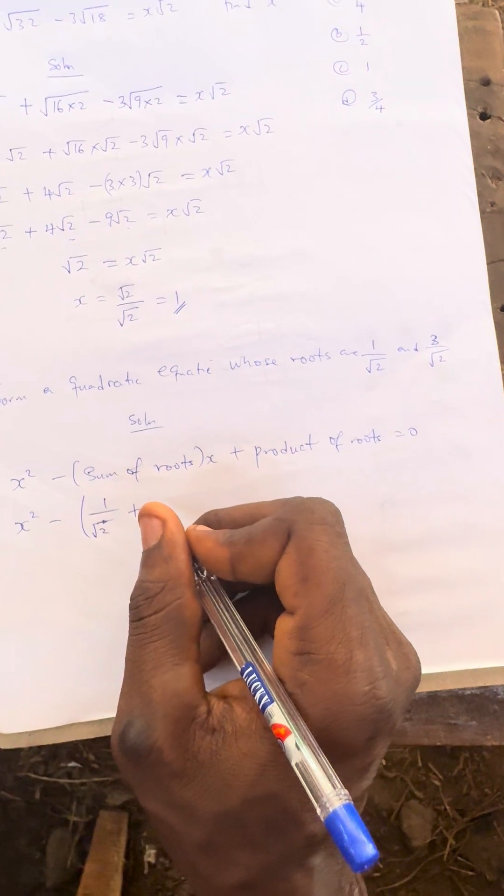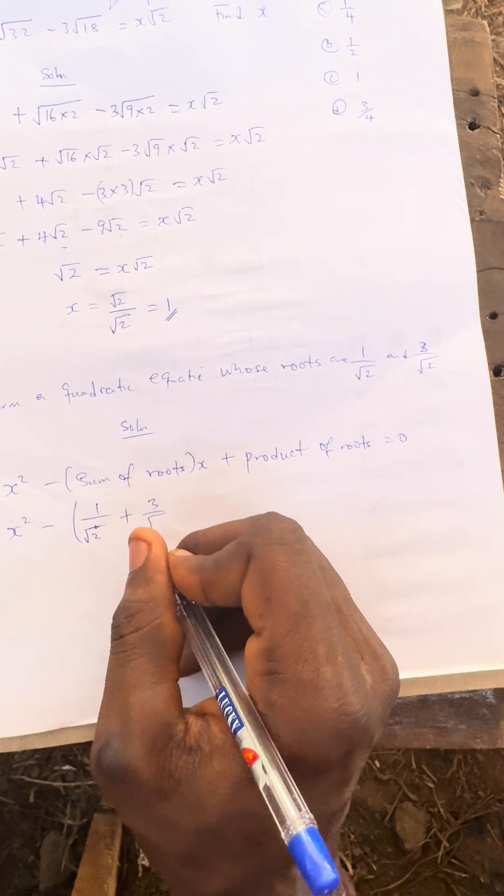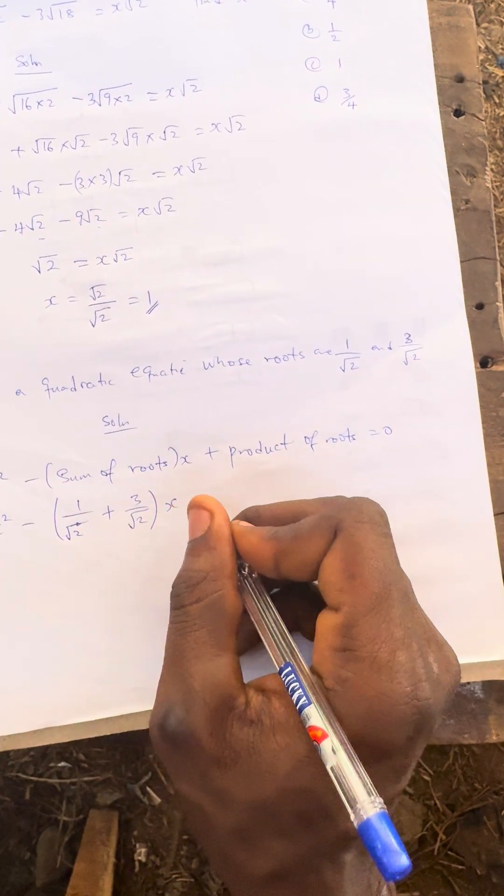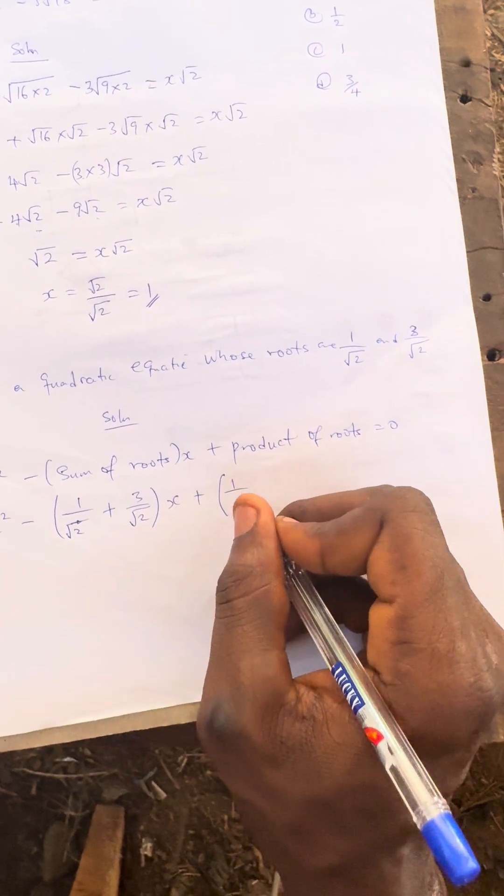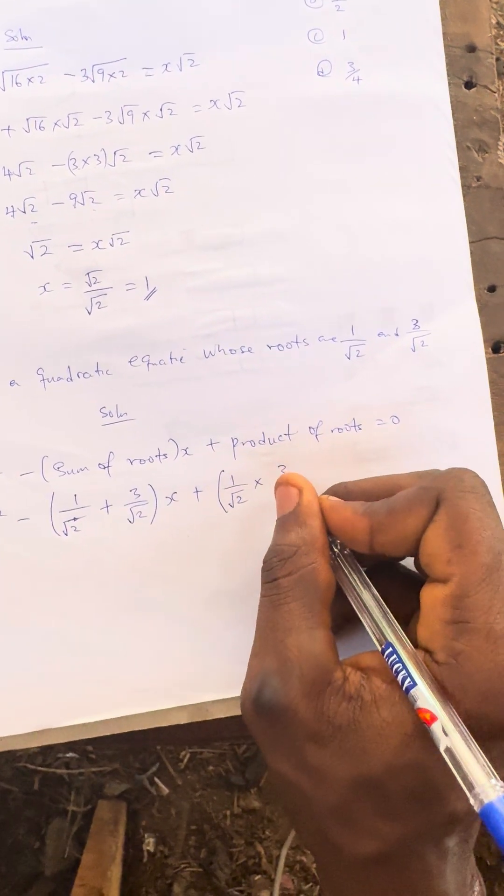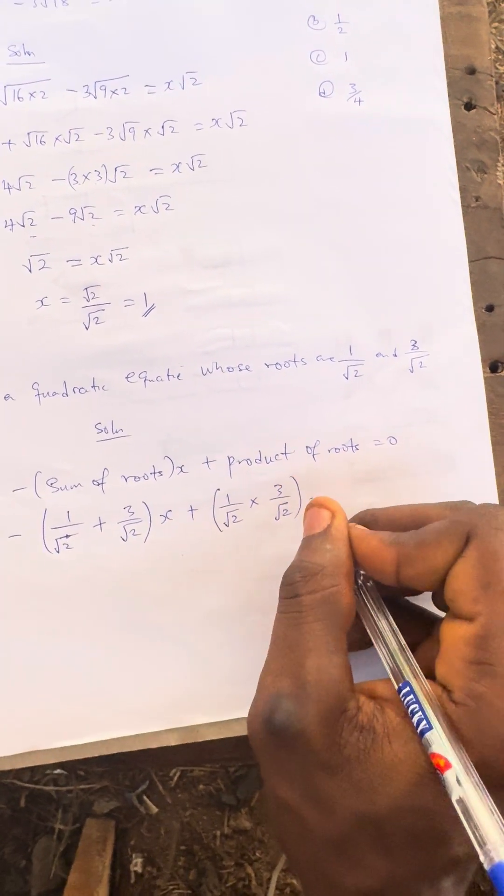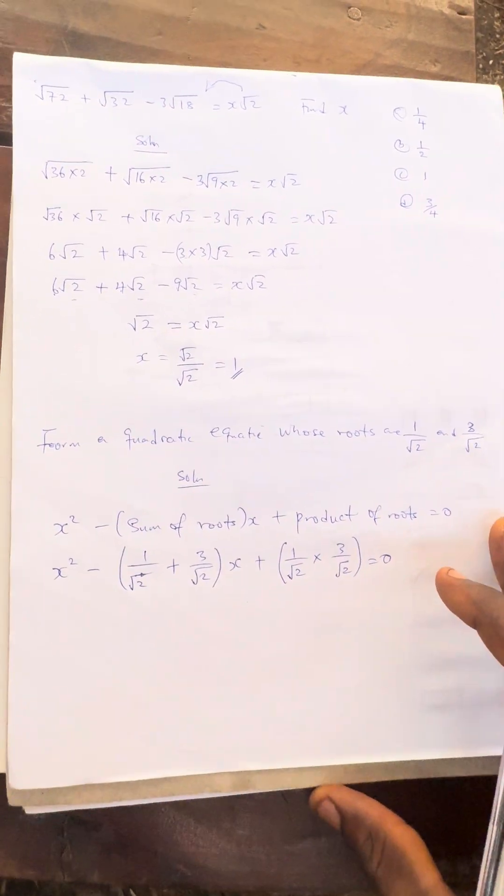x² minus sum of roots, that is the sum of the two roots. The two roots are 1/√2 and 3/√2. Sum means addition, so plus 3/√2, times x plus product means multiplication. That is 1/√2 × 3/√2 = 0. So let us now do this on the calculator.